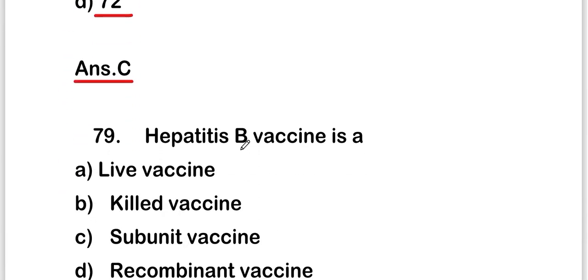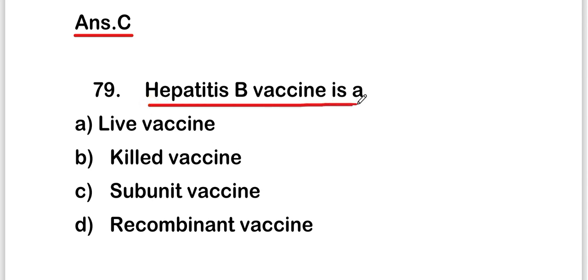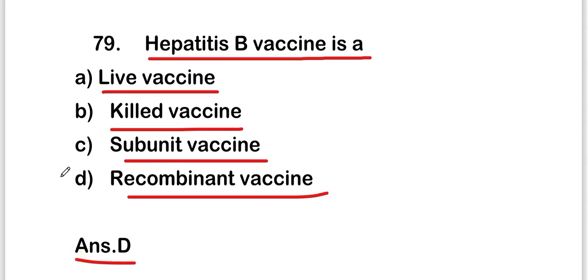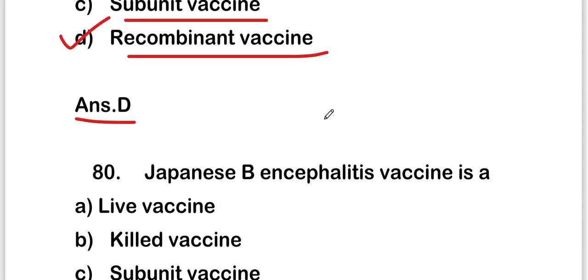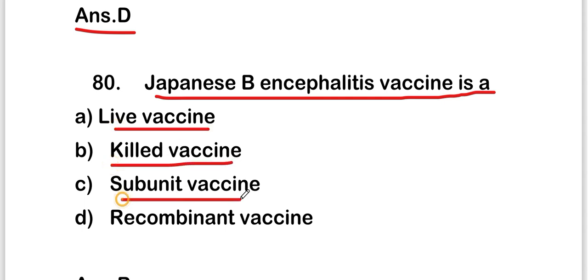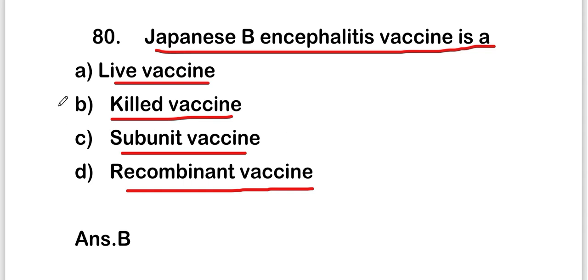The next question is: hepatitis B vaccine is a live vaccine, killed vaccine, subunit vaccine, or recombinant vaccine. The right answer is option D — it is a recombinant vaccine. The last question is: Japanese B encephalitis vaccine is a live vaccine, killed vaccine, subunit vaccine, or recombinant vaccine. The right answer is option B — it is a killed vaccine. These are all 20 questions of this video. Thank you for watching.